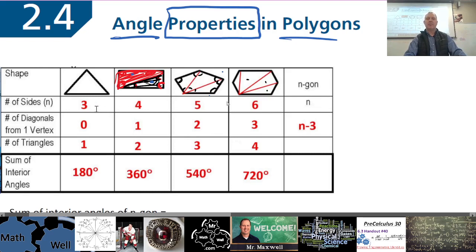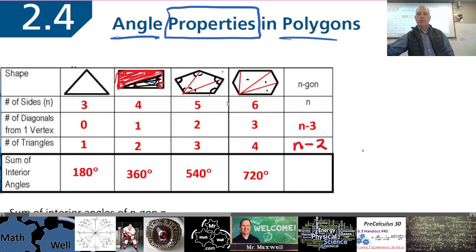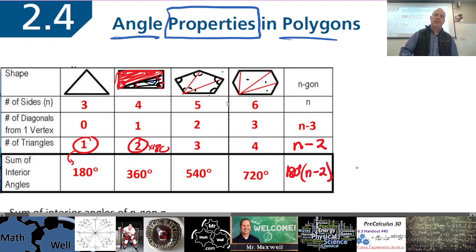Looking at the relationship, the number of diagonals is three less than the number of sides, so the number of diagonals is n minus 3. The number of triangles: three compared to one, four compared to two, five to three, six to four — the pattern is n minus 2. The sum of the interior angles equals the number of triangles times 180 degrees.